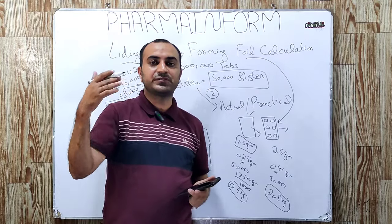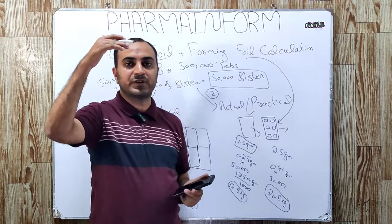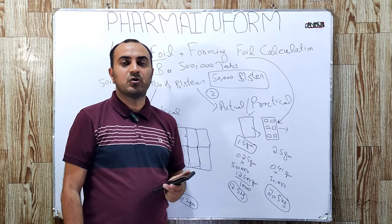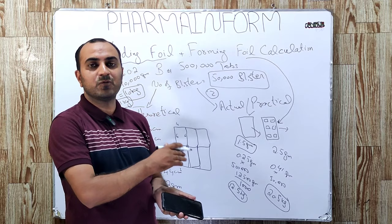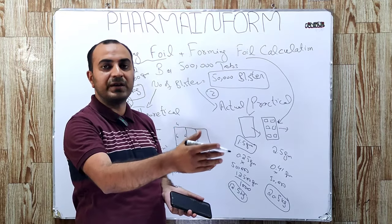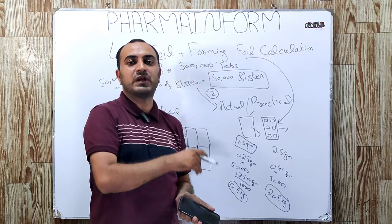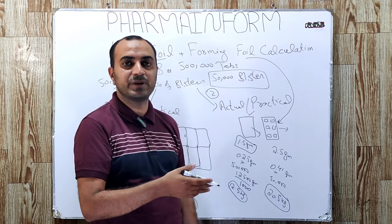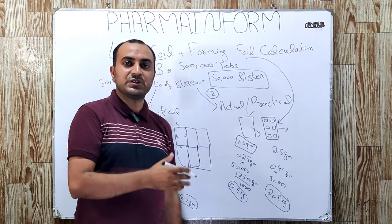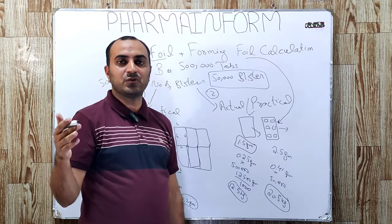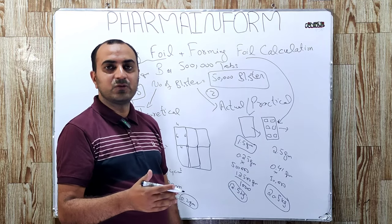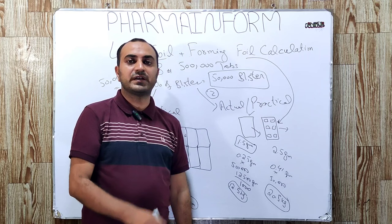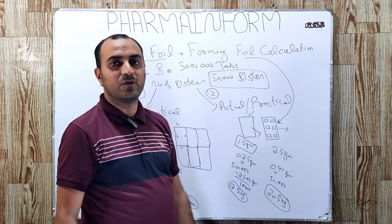To calculate the actual scrap factor precisely, note that when the blister machine runs, a web of scrap is collected in the form of a roll on top of the machine. When your batch is blistered, weigh the scrap collected as web and also the empty blisters removed during machine adjustment. By combining these weights, you can calculate the exact scrap factor and add it to the foil values to get the exact quantity of leading foil or forming foil required.